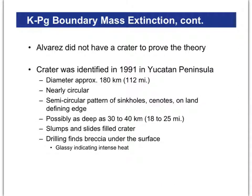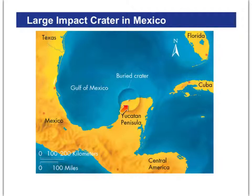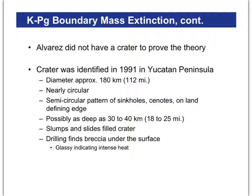Alvarez's problem was that he did not have a smoking gun — he didn't have the actual crater. However, in 1991 we found it. It was at the very tip of the Yucatan Peninsula — that's where Cancun is. This is called the Chicxulub Crater. It was buried under many, many layers of sediment, almost perfectly circular, and it was a complex crater, meaning the middle was raised up with a little hill in the center.